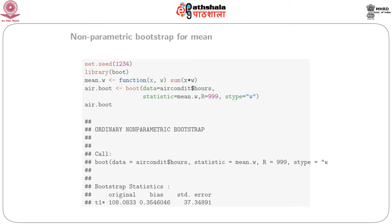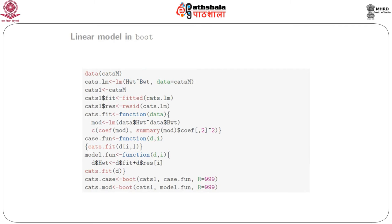If we run this, we get the output: the original bootstrap statistic value comes out to be 108.0833, the bias is 0.3546, and the standard error is 37.34891. In a later slide, we would see how to implement or construct confidence intervals using the functions of the boot package.